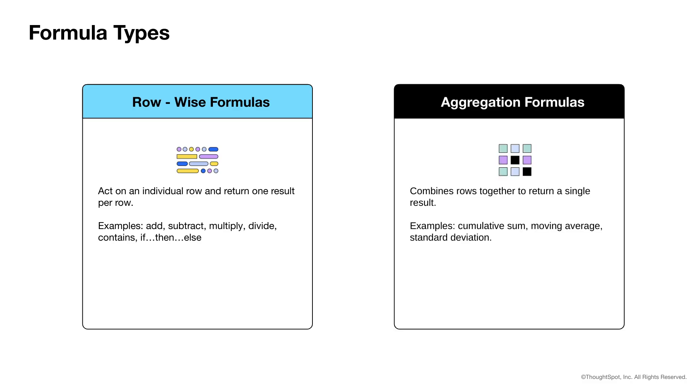Aggregation formulas combine multiple rows to return a single result. Examples include cumulative sum, moving average, and standard deviation.